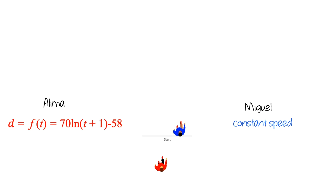Alema passes Miguel 2 seconds after she passes the start line. Miguel passes Alema 12 seconds later. A red line segment represents Alema's displacement from the start line in meters, and a blue line segment represents Miguel's distance from the start line in meters. As you watch, consider how you might determine Alema's average speed from 2 seconds to 14 seconds after she passed the start line.